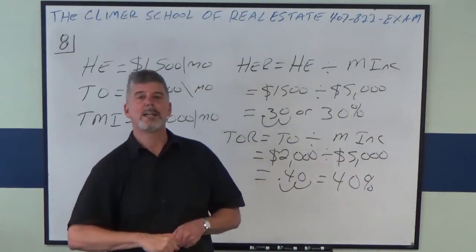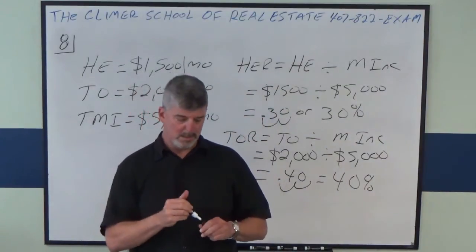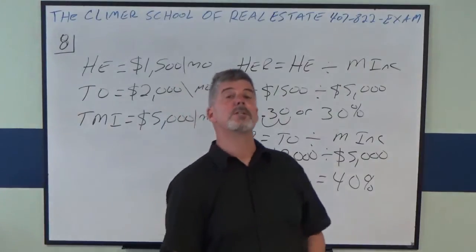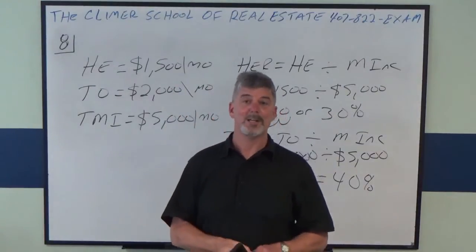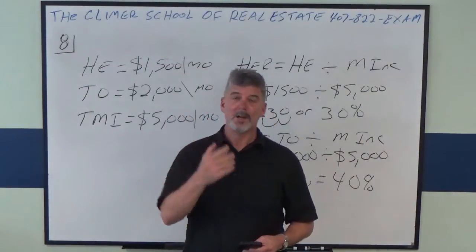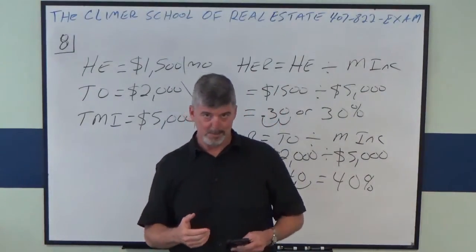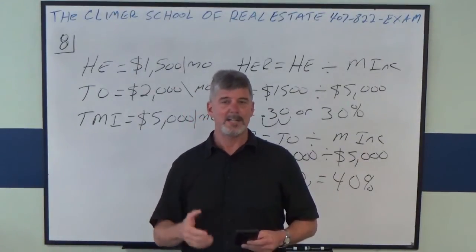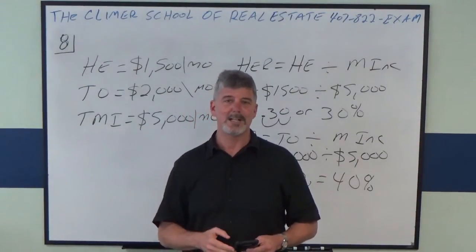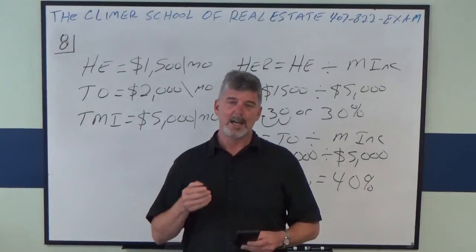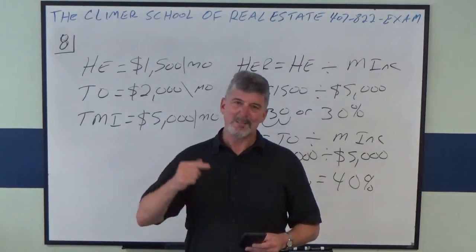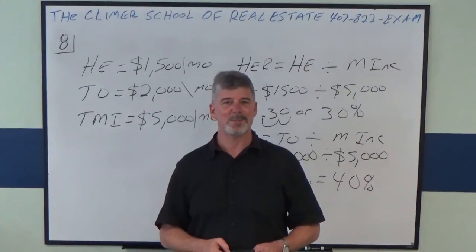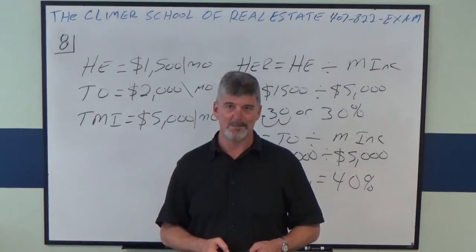And that is how you do an underwriting ratio problem when they ask you for the housing expense ratio or the total obligations ratio. I hope that helped you. If you have any questions, call us at the school: 407-822-3926. Why don't you think about dropping in sometime and experience the Clymer School difference for yourself.